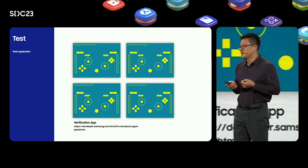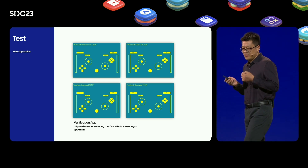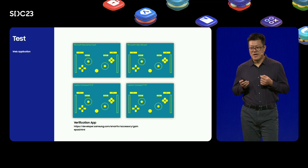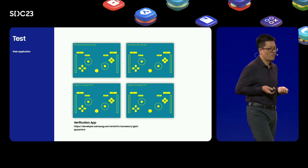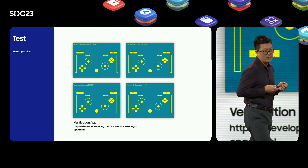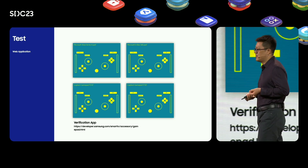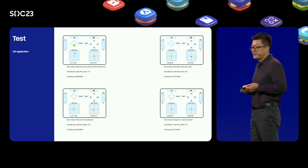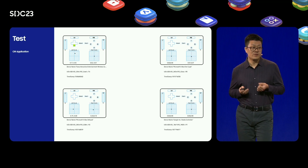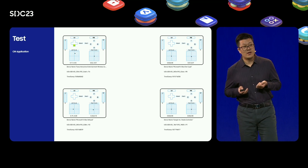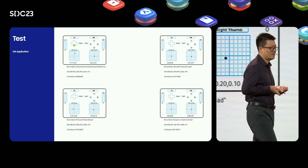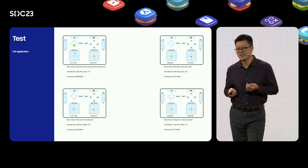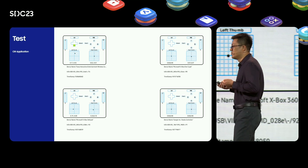We have already released the verification method on the Samsung developer website. To verify that your gamepad works well on web applications, you can use the provided GamePad Checker application. Simply press each key on the gamepad — if the app responds correctly to each gamepad key, it means your gamepad can work well on web apps. The C-Sharp verification application can also be used to ensure that your gamepad works well in C-Sharp applications.